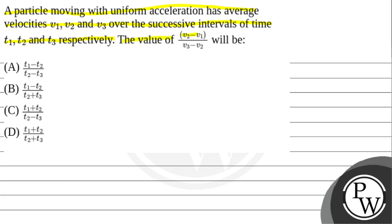The value of v2 minus v1 divided by v3 minus v2 will be: Option A, t1 minus t2 divided by t2 minus t3. Option B, t1 minus t2 divided by t2 plus t3.